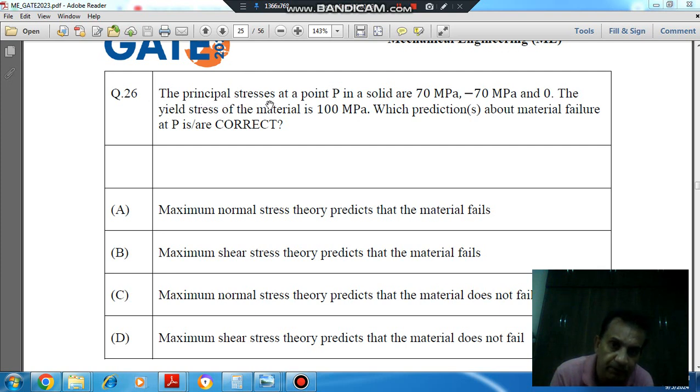The principal stresses at a point P in a solid are 70 MPa, minus 70 MPa, and 0. The yield stress of the material is 100 MPa. Which prediction or predictions about material failure at P is or are correct?